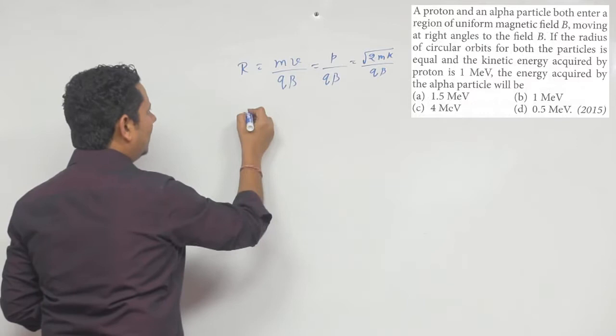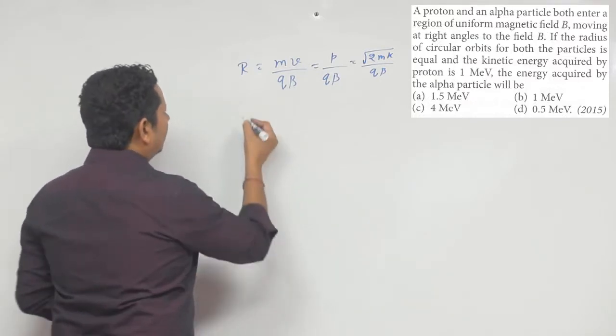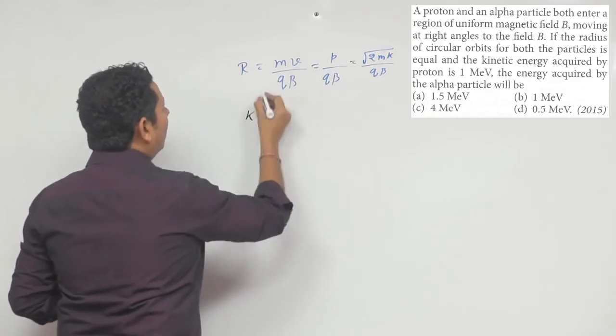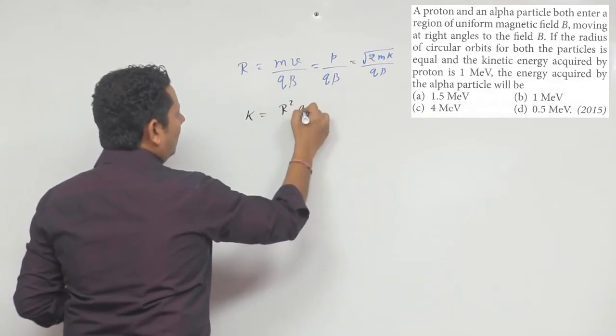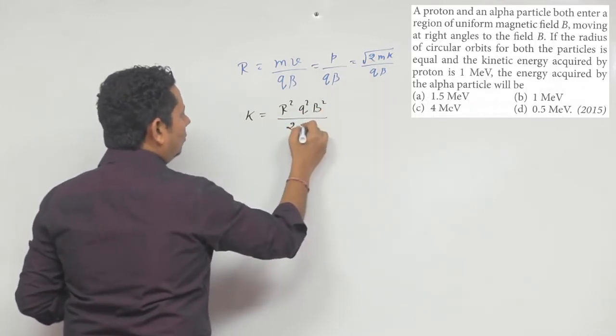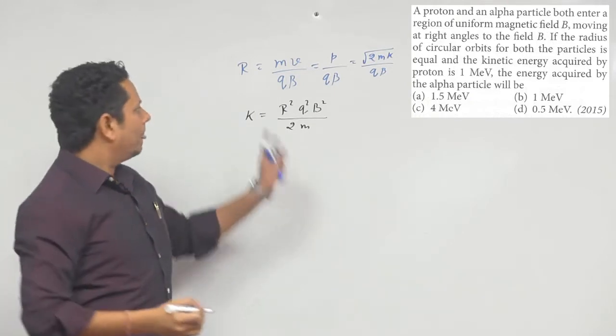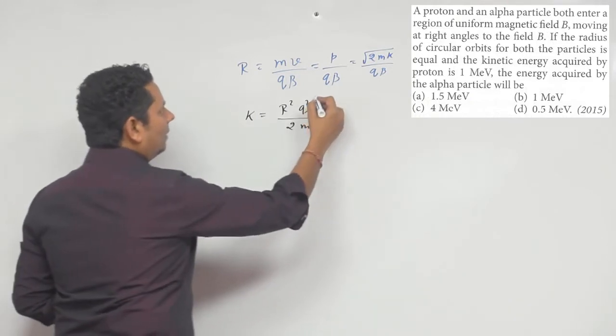square kar dein, thoda sa rearrange karein, to hum yahan pe aisa likh sakte hain: Kinetic energy K will be equal to r²q²B²/2m. Yahan aapki kinetic energy hogi kisi bhi particle ki. Now is case mein humein diya hai ki dono ka radius barabar diya hua hai.